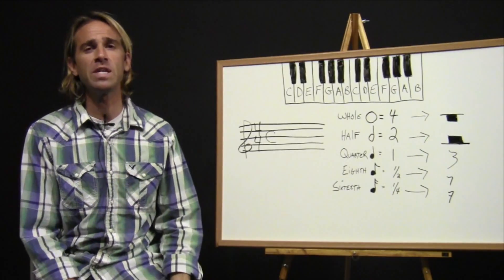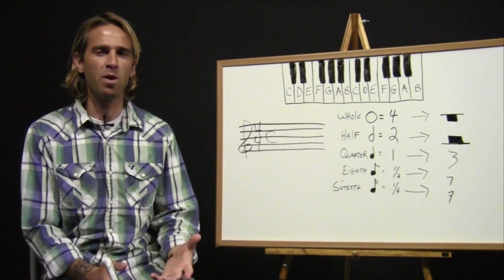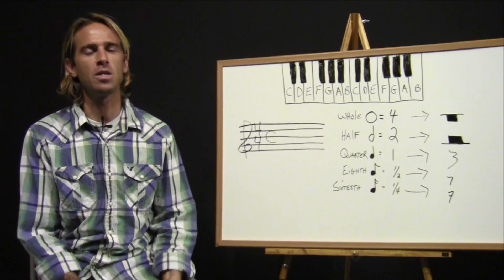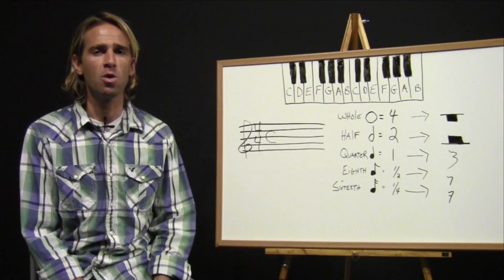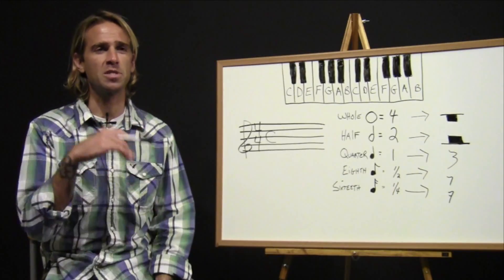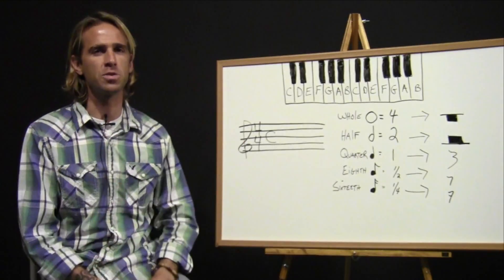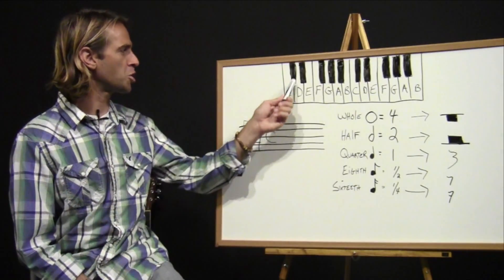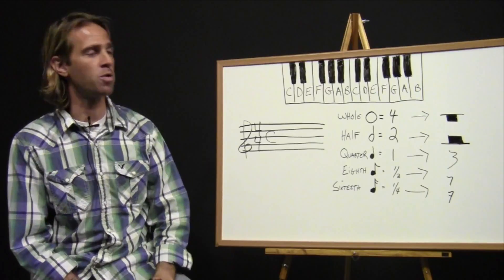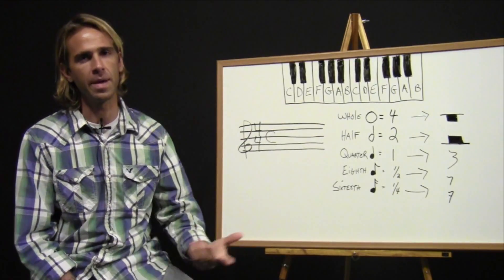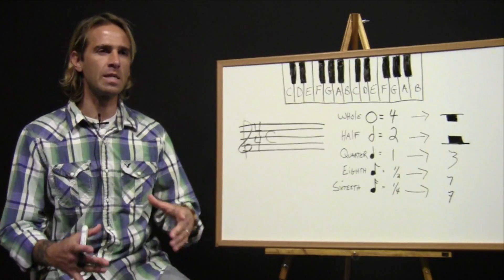Hi guys, welcome to part three of the online music theory course. In the previous chapter we talked about the names of the notes and all those pitches — we talked about half steps and semitones, which gives us basically 12 tonal sounds in music, including the sharps and flats and our natural notes, the white keys on the keyboard and the guitar.